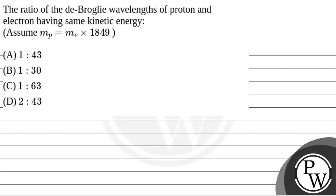Hello, bachelor. Let's read the question. The question says that the ratio of the de Broglie wavelengths of proton and electron having the same kinetic energy, given that the mass of proton is equal to 1849 times the mass of electron.